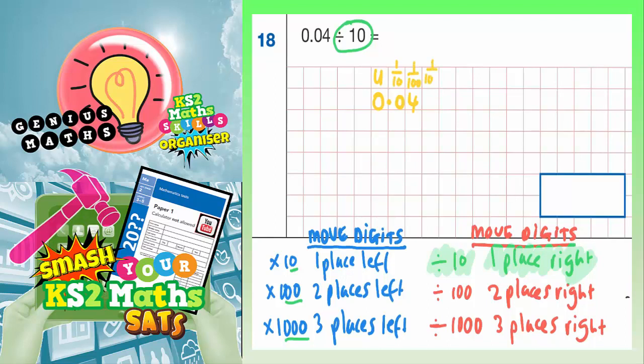then it would be thousandths. And we need to move every digit one place to the right. So the 4 is going to go one place to the right into this column. This 0 is going to go one place to the right in this column. And this 0 is going to go one place to the right into the tenths column.